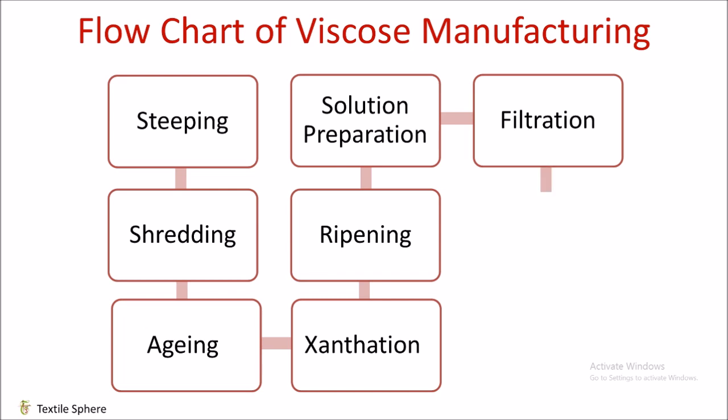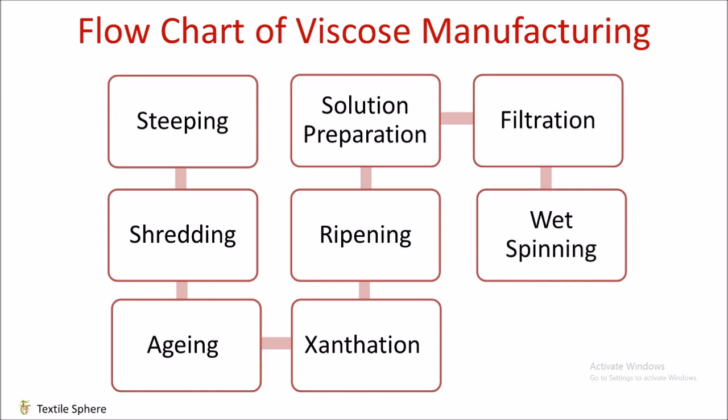The last process is Wet Spinning. In this process, the ripened viscose solution passes through a centrifugal pump due to the pressure exerted on the solution by compressed air. The viscose solution is forced through a spinneret which has many fine holes with diameter ranging from 0.05 to 0.1 mm. As soon as the filaments emerge from the spinneret, they are taken together to the surface of the spinning bath and then guided to two rollers, from where they are wound onto the spindle.